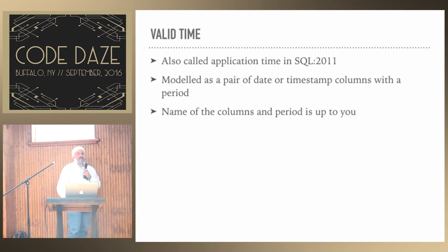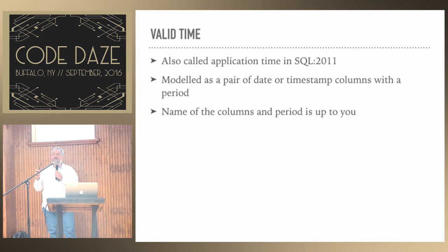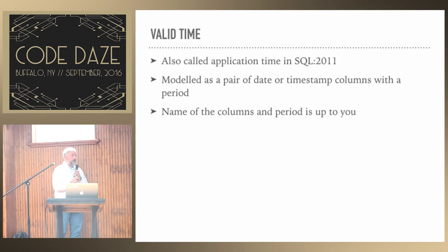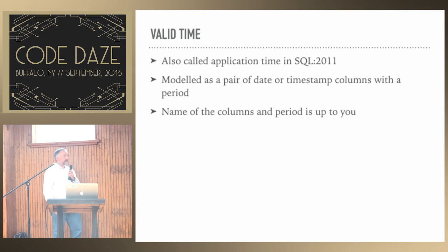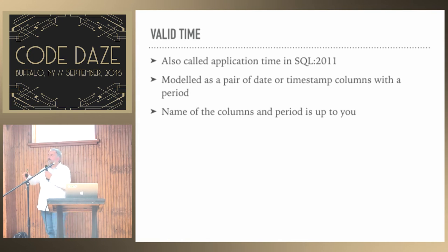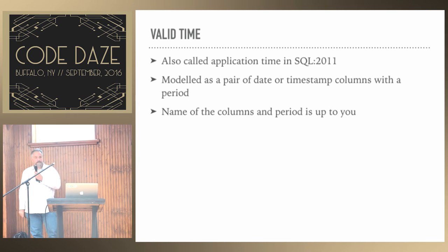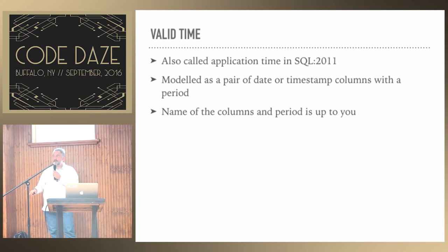Valid time in SQL 2011 is also called application time — the key being who is responsible for tracking this period. Your application is entirely responsible for tracking valid time; the system doesn't do it for you. When you insert data, you are responsible for saying at what point in time data becomes valid. When you change it, you're responsible for saying when it's no longer considered true. When you query, you have to specify at what point in time you want information, otherwise you get data from all time periods. The model is a pair of date or timestamp columns — both must be the same type — and you declare a period over them.